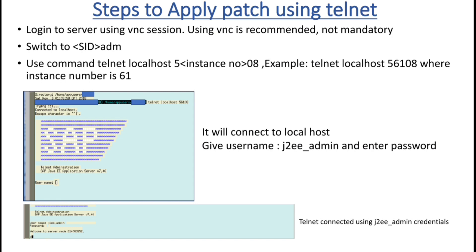These are the steps to apply a patch using telnet. First, you need to log into your VNC session — if you are not interested in using VNC, that is also fine. Once you log in, you need to switch to sidadm. Always deploy telnet from sidadm.